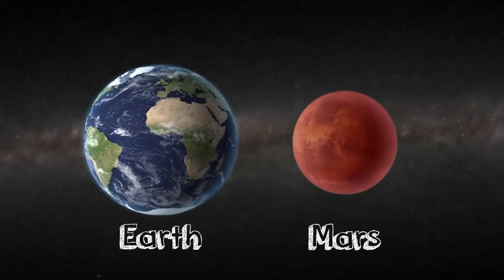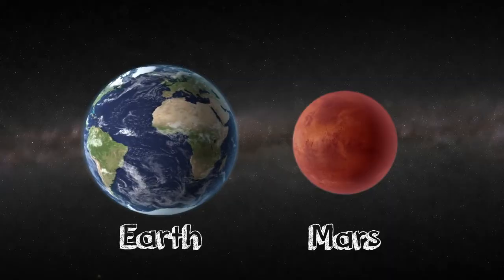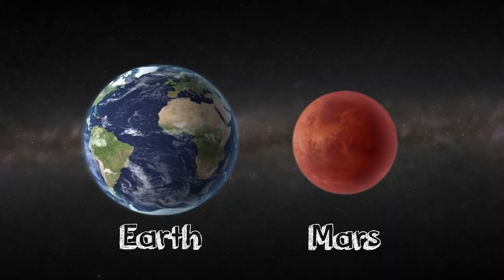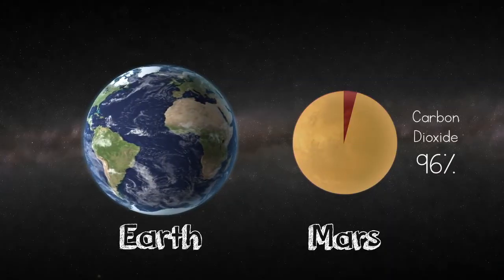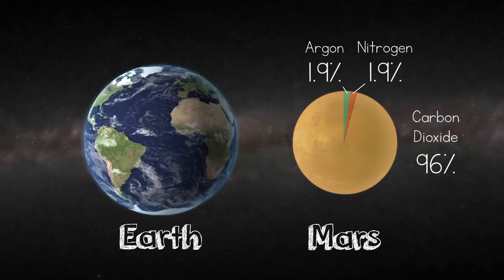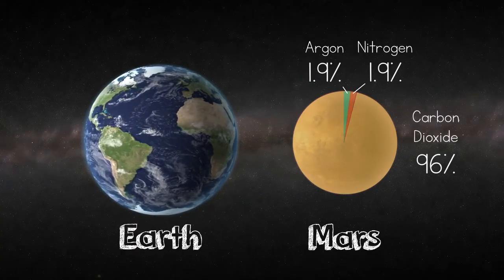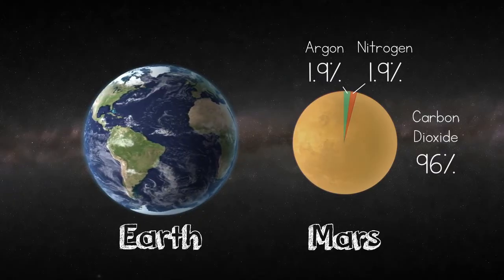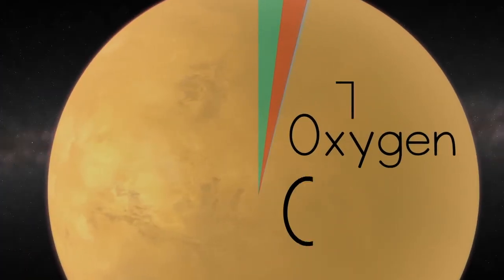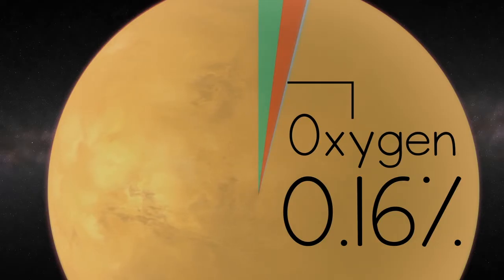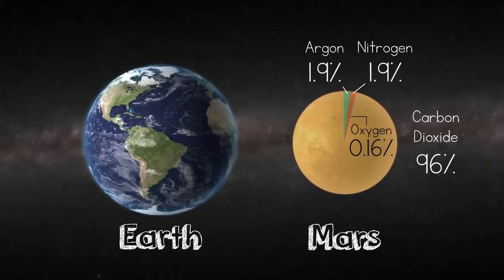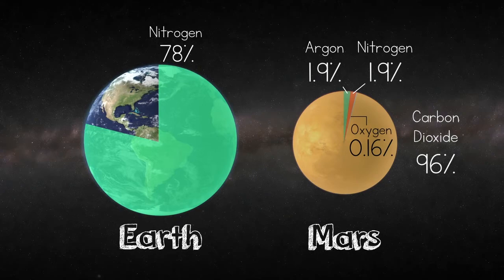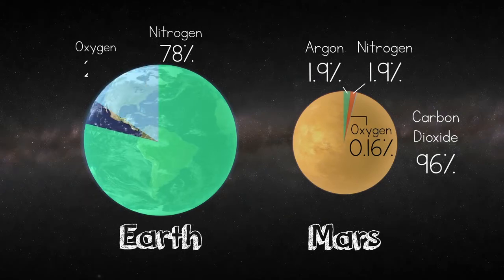As we just learned, the atmosphere on Mars is much thinner than on Earth. It's made up of 96% carbon dioxide and around 2% of both argon and nitrogen. Can you think of a big reason it would be tough for humans to live on Mars? Yep, oxygen. Only 0.16% of the Mars atmosphere is made up of oxygen. Compare that to Earth's atmosphere, which is made up of 78% nitrogen and 21% oxygen.